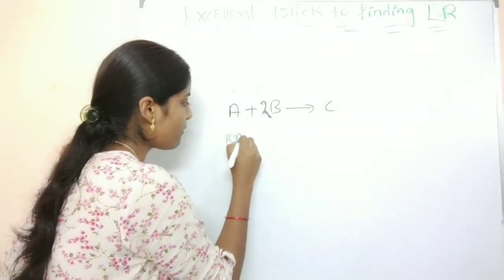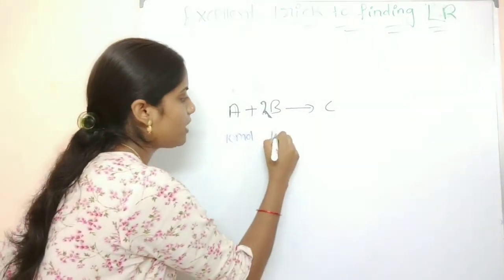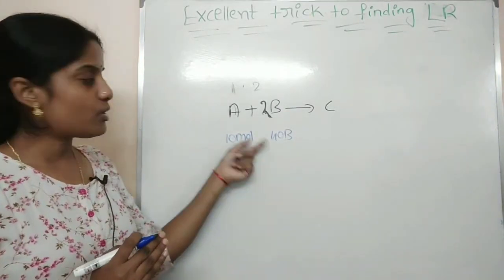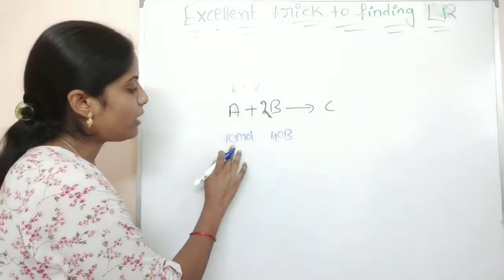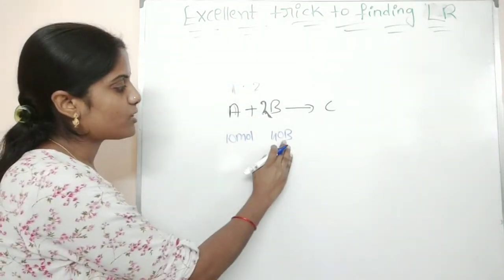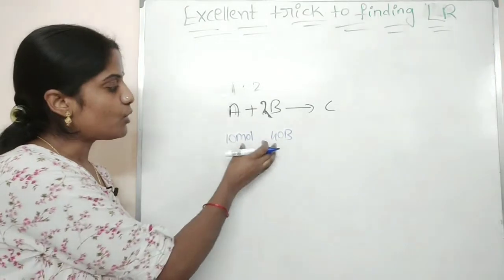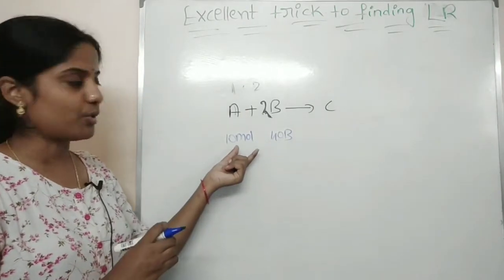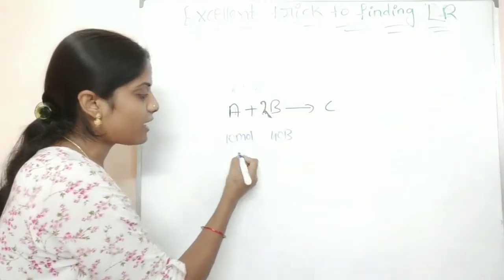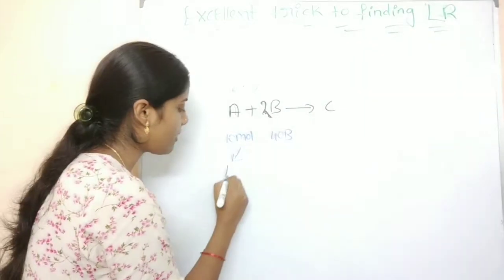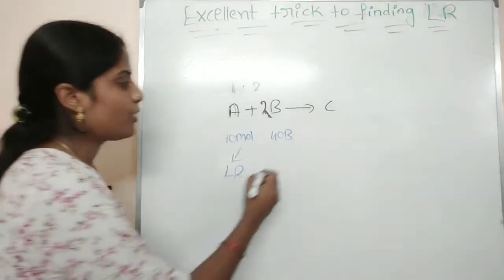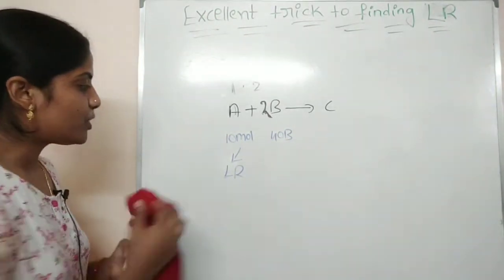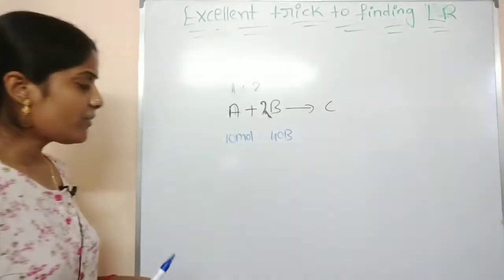But we have 10 moles of A and 40 moles of B. The ratio of 10 moles is 1 is to 2, but here we have 40 moles. So what reacts with 10 moles of A? We have 20 moles of B. The ratio of the amount consumed determines the limiting reagent. If we have excess of 20 moles, then that is the excess reagent.